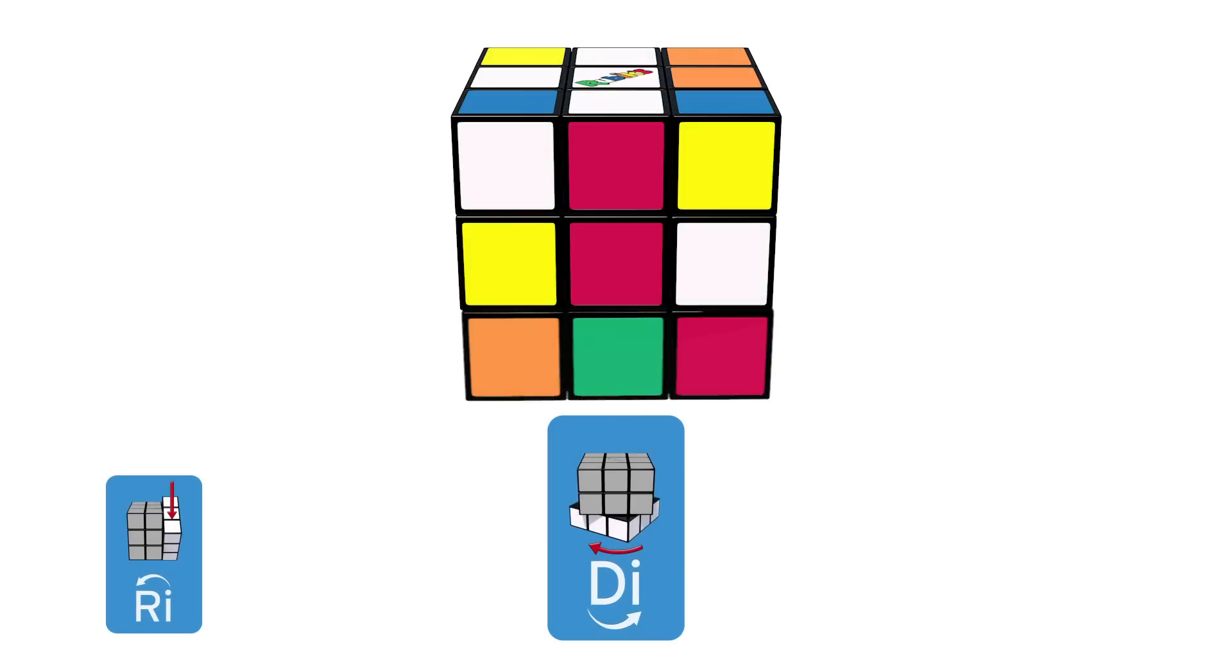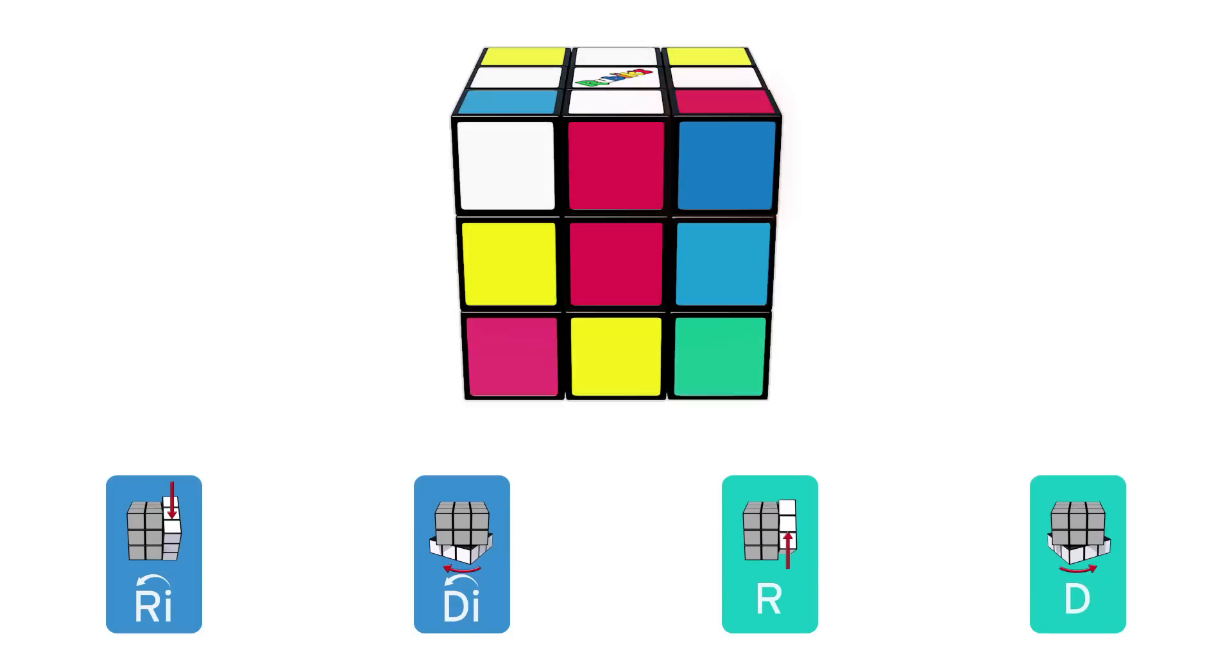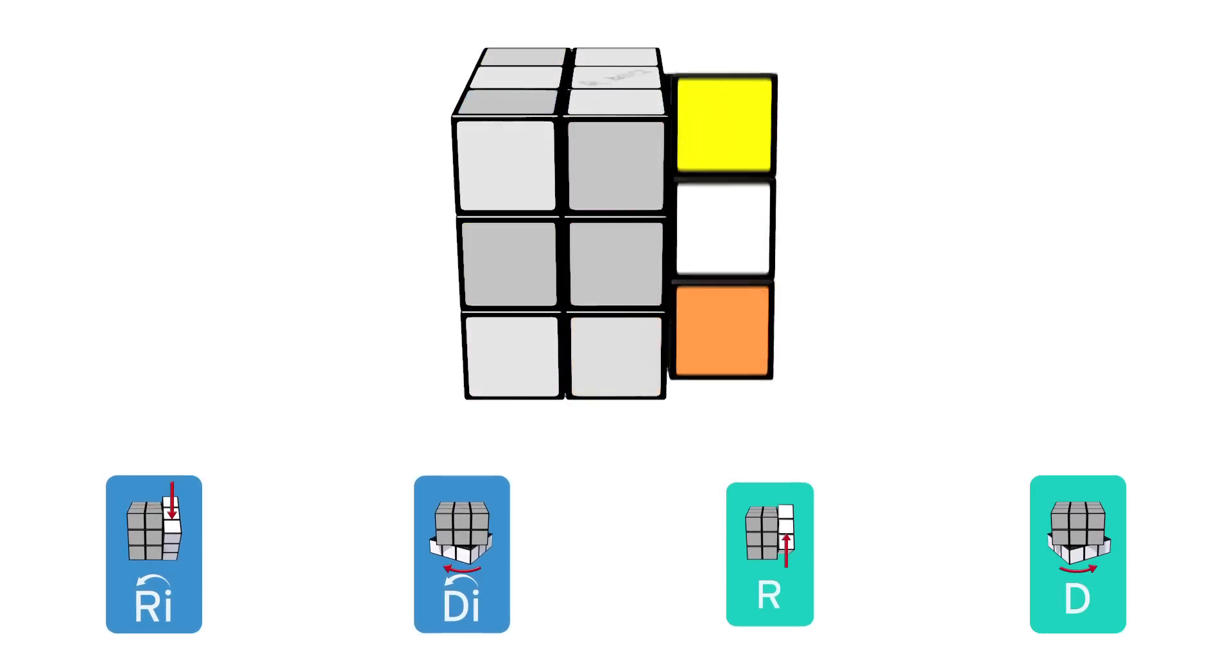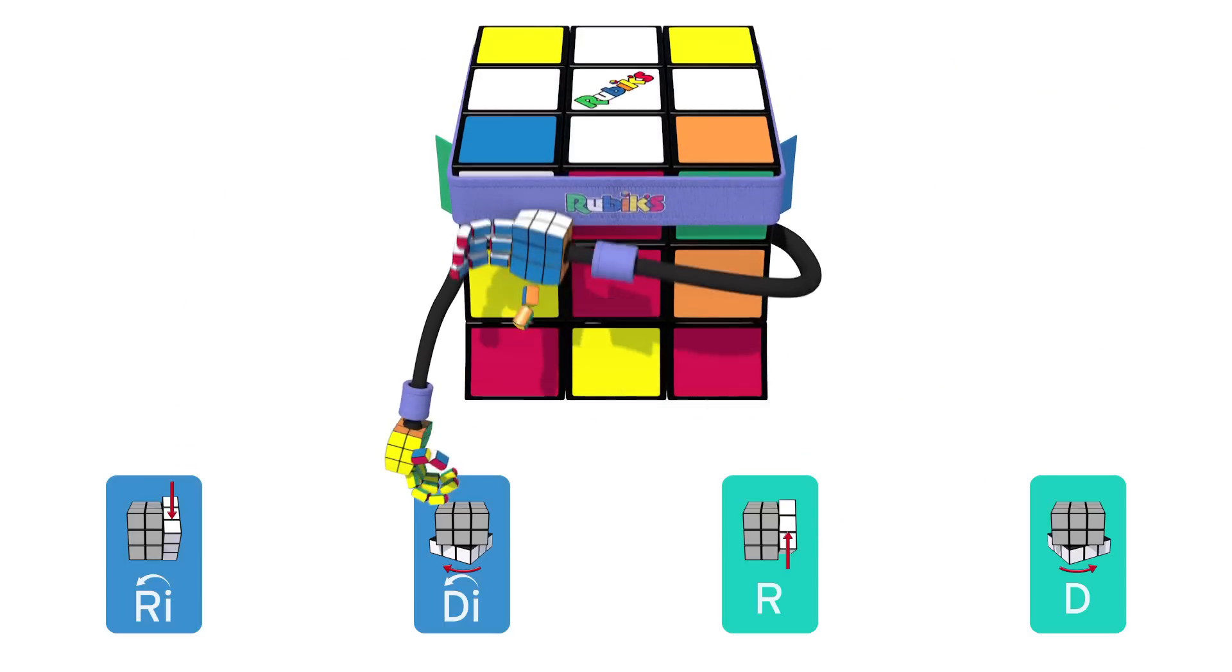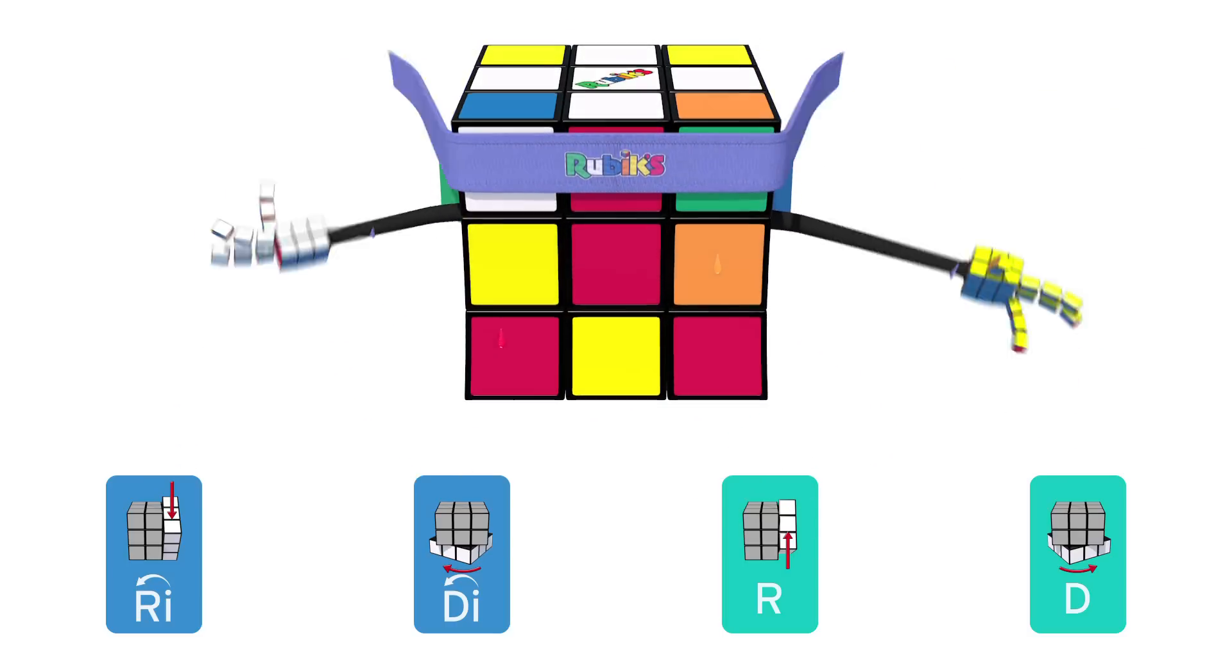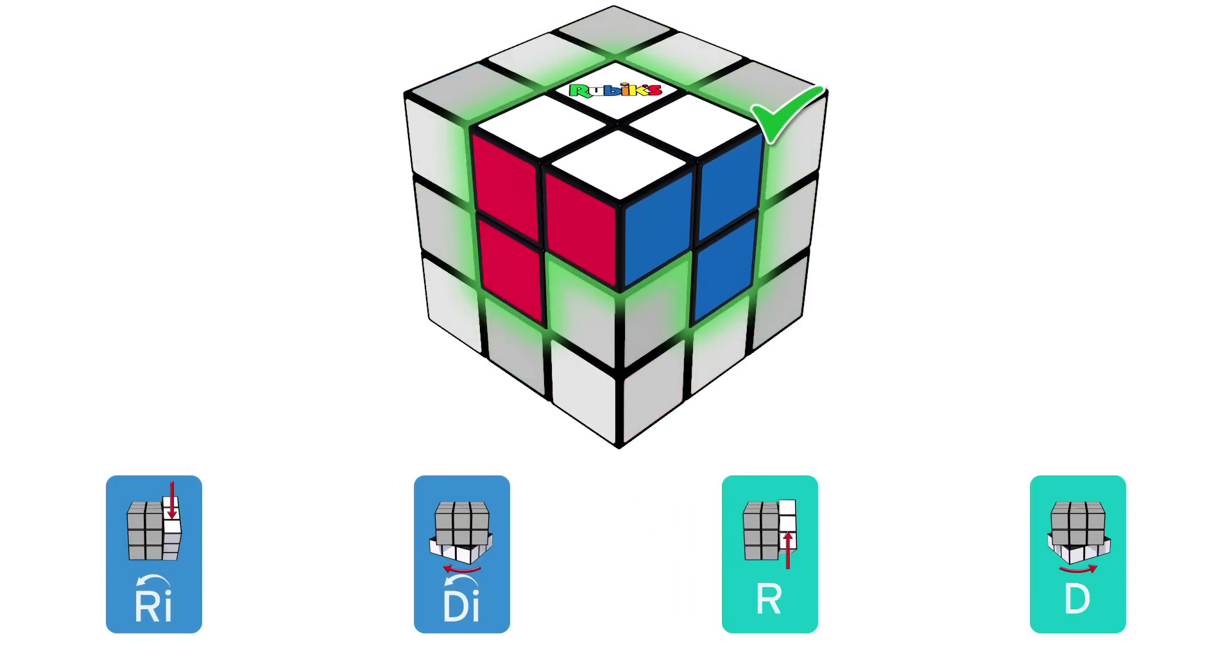Right inverted, down inverted, right, down. You need to keep doing it over and over again until it appears in the right place. Don't give up. Keep going. Persevere. You'll get there. Keep checking so you don't miss the moment where they're all in the right place.